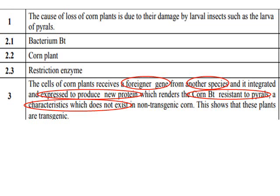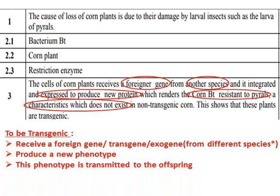This phenotype was transmitted to the offspring — we notice that many plants are Bt resistant. Whenever we are asked to prove if an organism is transgenic, we focus on these ideas: it should have a foreign gene, also called a transgene or exogene, either from a different species or from a different organism of the same species; it produces a new phenotype; and this gene is transmitted to the offspring, so the offspring will have the same phenotype.